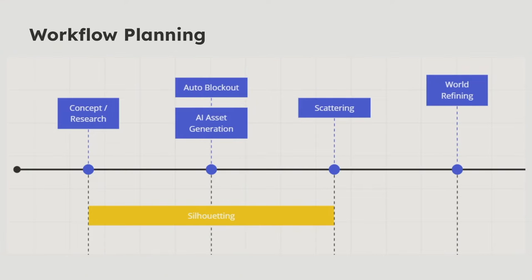The third step is scattering. You have assets — generated through AI, bought, or from an asset bank — and you want to place them in the world to feel organic. The first stage is just scatter them, make sure it works. Then actually figure out how to make this a real-life world; how do you make a player walk through it? These are all steps for setting silhouettes, scale, and shape, which we'll cover throughout the talk.